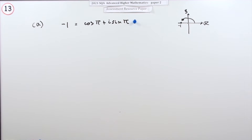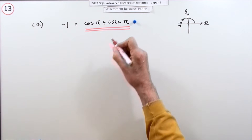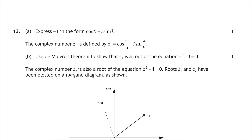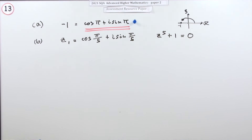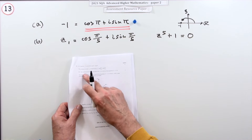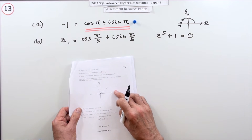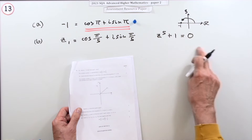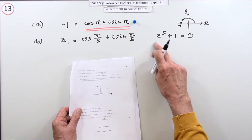That's one mark. Now part b, also for one mark: use De Moivre's theorem to show that z1 is a root of this equation. The rest of the question also seems to be about the roots of this equation.